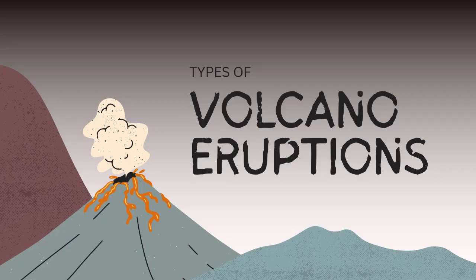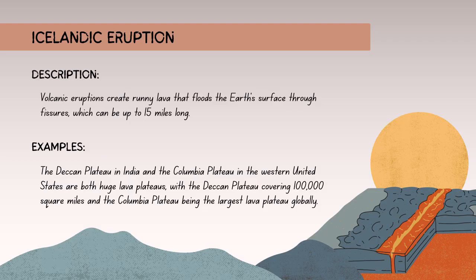Now let's learn about types of volcanic eruptions. Icelandic eruptions occur in Iceland and are characterized by basaltic lava, an effusive nature, and fissure eruptions. Instead of a central or single vent, Icelandic eruptions frequently occur along fissures or cracks in the earth's crust, leading to the simultaneous eruption of multiple vents. These eruptions contribute to the formation of vast lava plateaus.